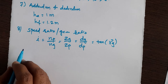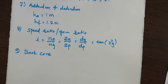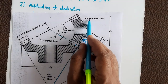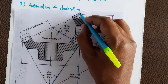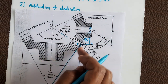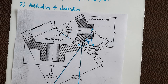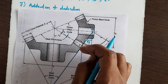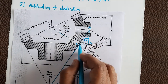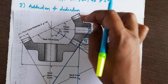The next terminology is back cone. The back cone is an imaginary cone whose elements are perpendicular to the elements of the pitch cone. You can see here the pinion back cone and the gear back cone. The pitch cone is here, the back cone is here, and a 90-degree angle exists between them.